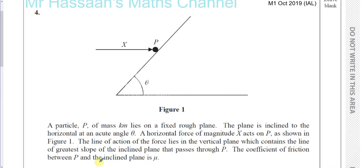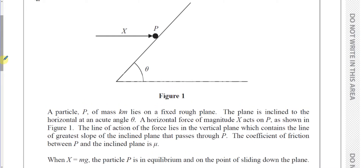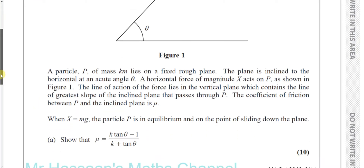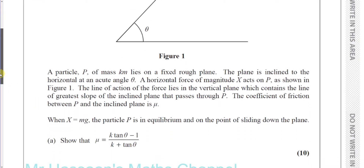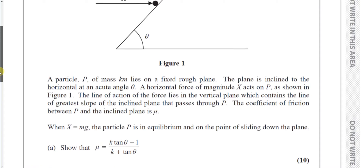The coefficient of friction between P and the inclined plane is mu. When X equals Mg, the particle is in equilibrium and on the point of sliding down the plane. Show that mu equals K tan theta minus 1 over K plus tan theta.